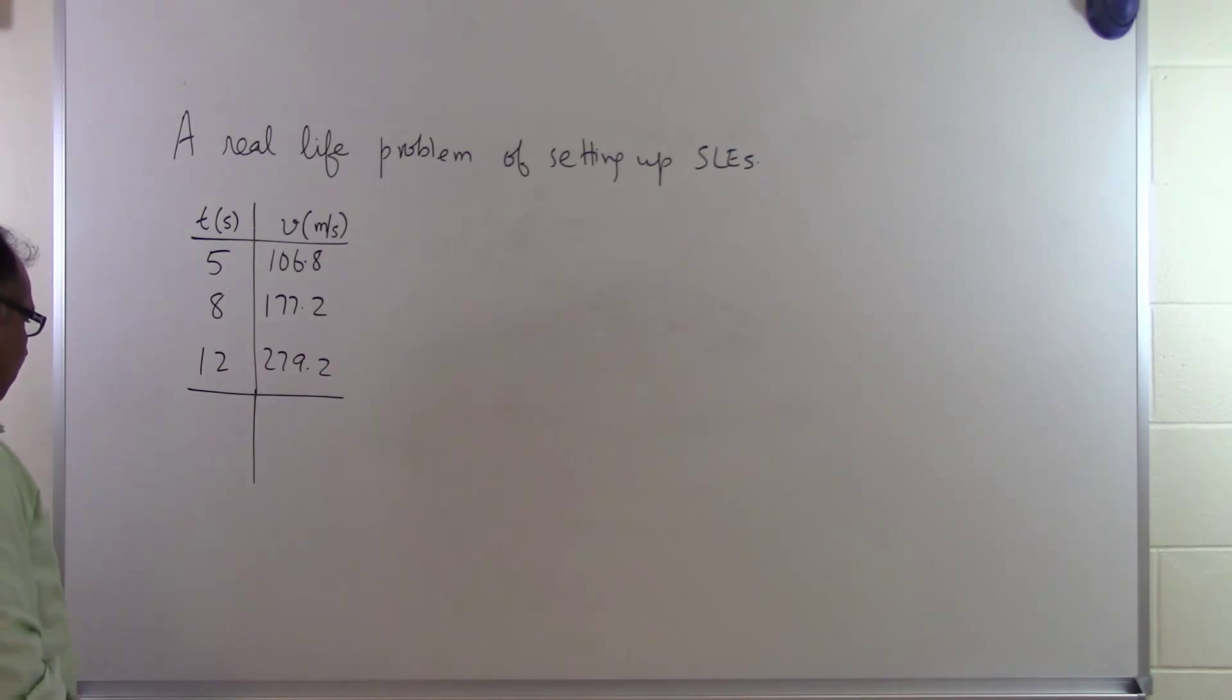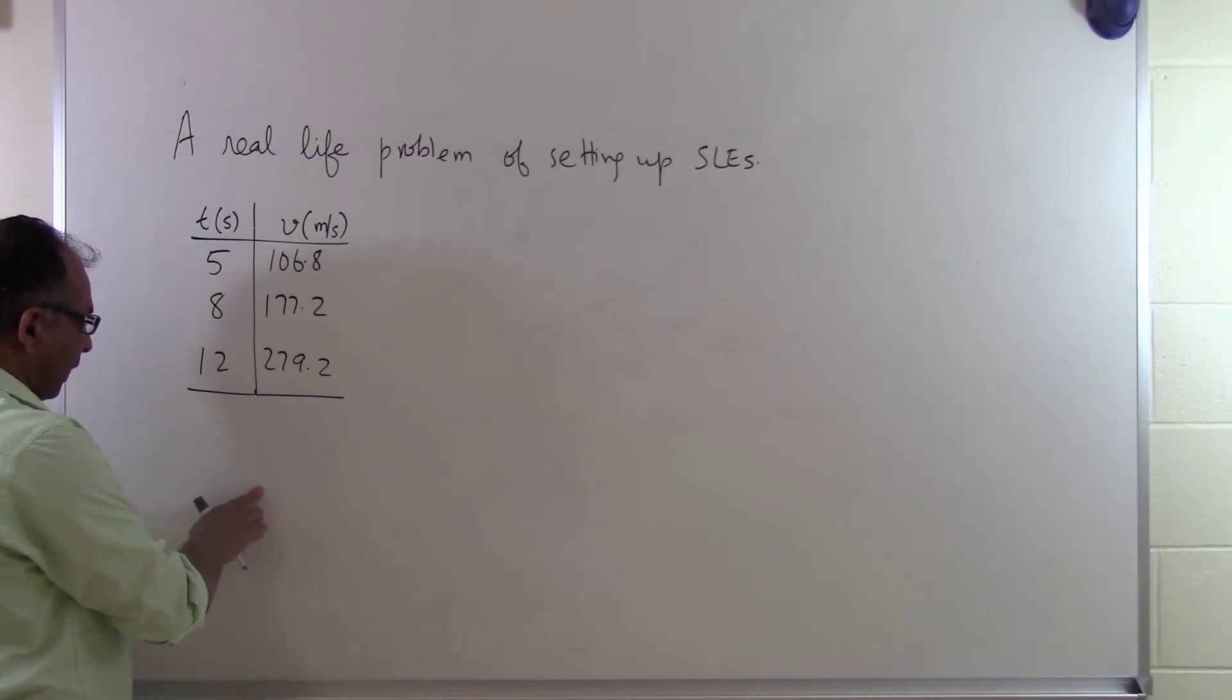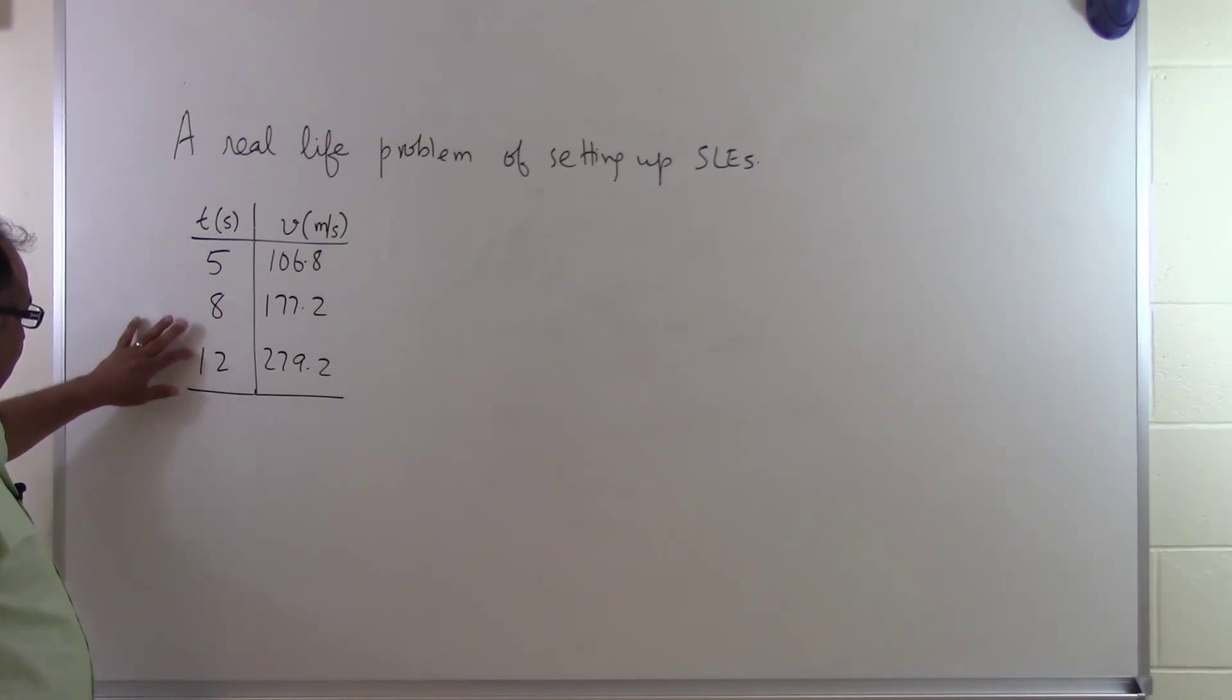One of the questions which people might ask when somebody gives you velocity versus time data at discrete data points, a finite number of points, is can you find out what the value of the velocity is at some point, let's suppose 6 seconds or 9 seconds, somewhere in between 5 and 12.